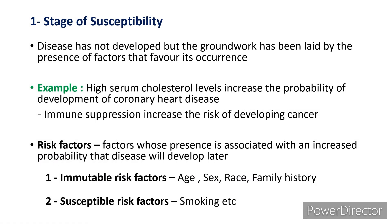Now coming to the first stage — stage of susceptibility. In this stage, disease has not developed but the groundwork has been laid by the presence of factors that favor its occurrence. For example, high serum cholesterol levels increase the probability of development of coronary heart disease, and immune suppression increases the risk of developing cancer. So the factors we consider here are high serum cholesterol level and immunity.